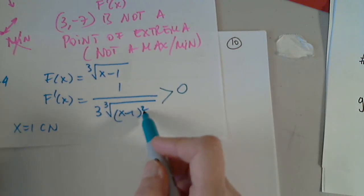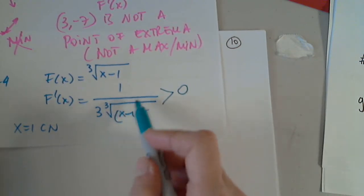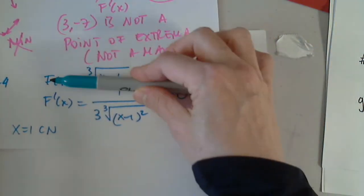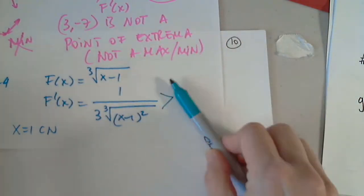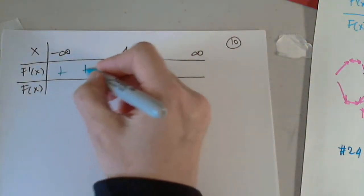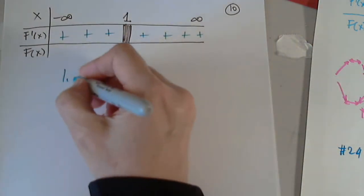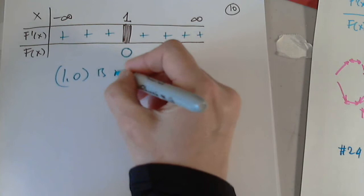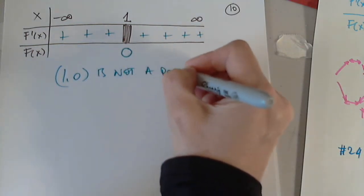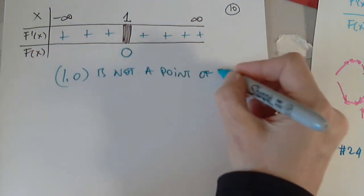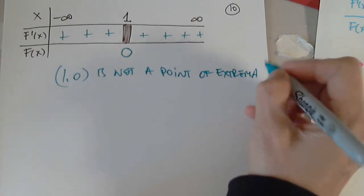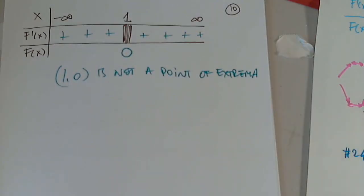This is positive, this is squared which is positive, the cube root of positive is positive, positive at the top, positive at the bottom, greater than 0, very nice. (1,0) is not a point of extrema, the derivative does not change sign, goodbye.